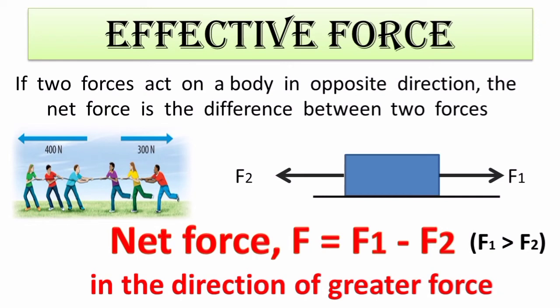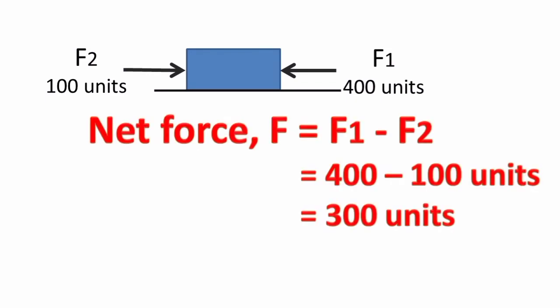For example, here if F1 is 400 units and F2 is the force which is applied on the body, which is 100 units, then the magnitude of the total force or the effective force will be F1 - F2, since the forces are acting in opposite directions. The answer here will be 300 units, and the object moves towards left as the greater force is F1.